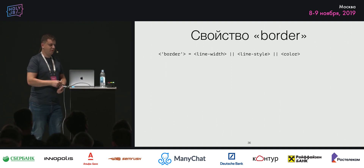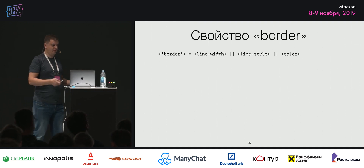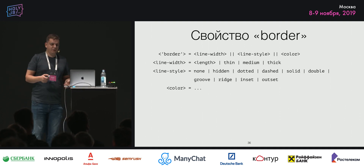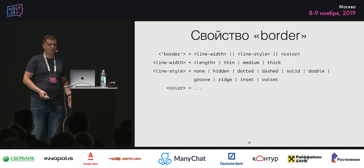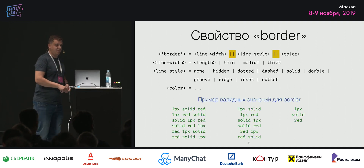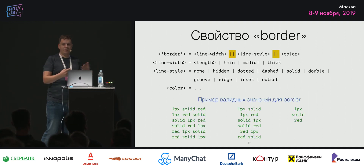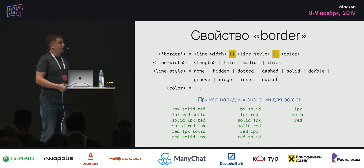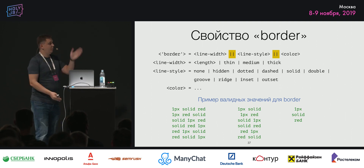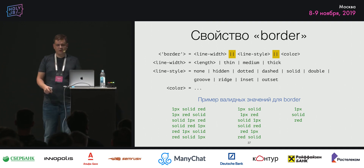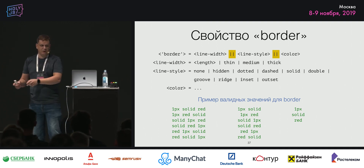Ещё один пример — border. Здесь три компоненты: ширина (длина либо ключевые слова), стиль (набор ключевых слов) и цвет. Очень важен комбинатор «две вертикальные черты»: оказывается, ширину, стиль и цвет можно перечислять в любом порядке — это обычно сюрприз для разработчиков. По спецификации можно использовать любую перестановку и указывать либо все три элемента, либо два, либо один — все это валидные значения.